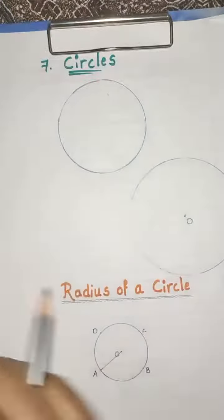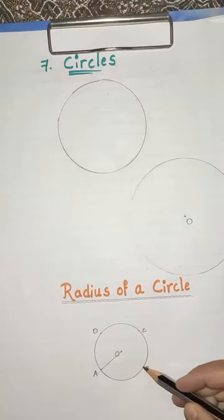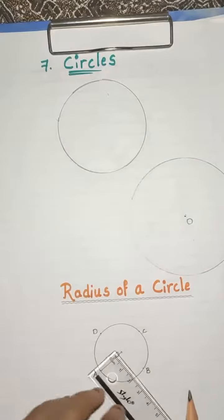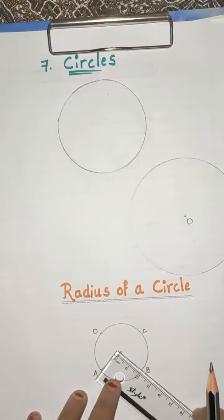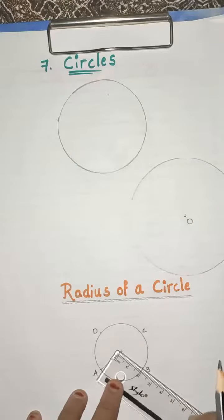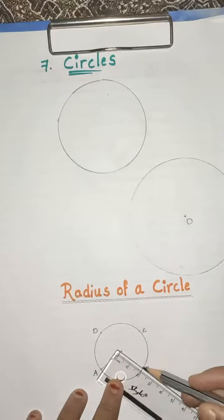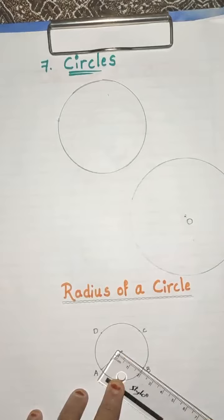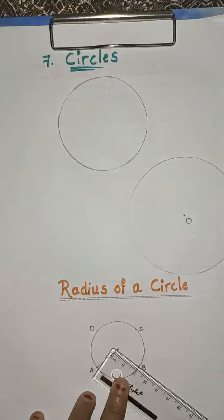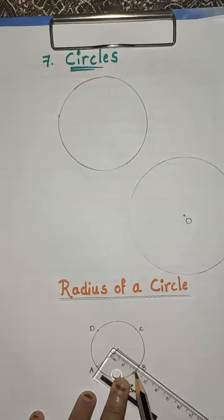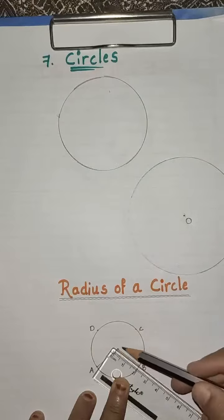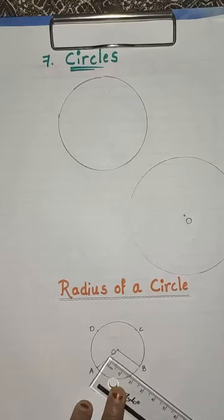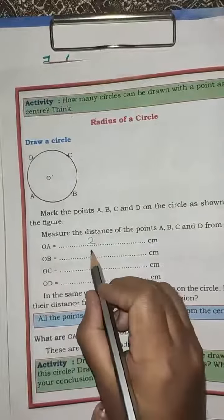Now come to OB. Here is O and this is the B point. Now let us take the distance by using our scale. In the same way, place the scale from 0 to here — the 0 on the scale should be on the point O. Now let us draw a line. You can see it is 0 to 1, 2. So the distance from O to B is 2 centimeters. OB is equal to 2 centimeters.